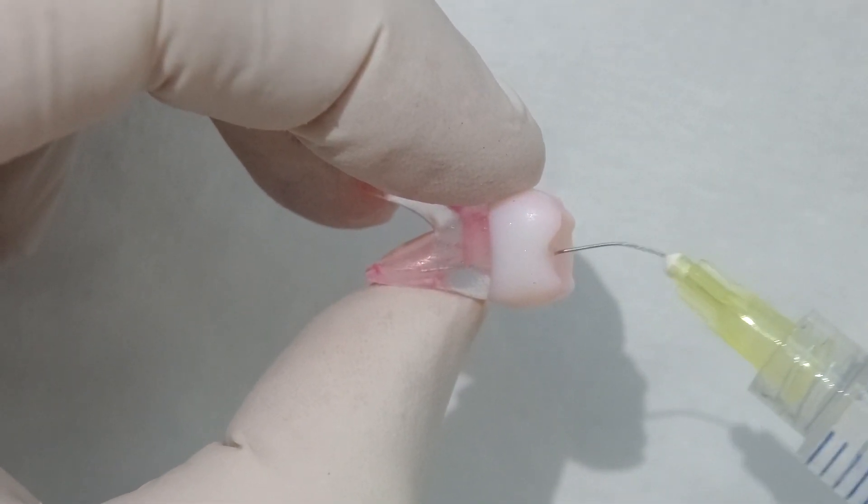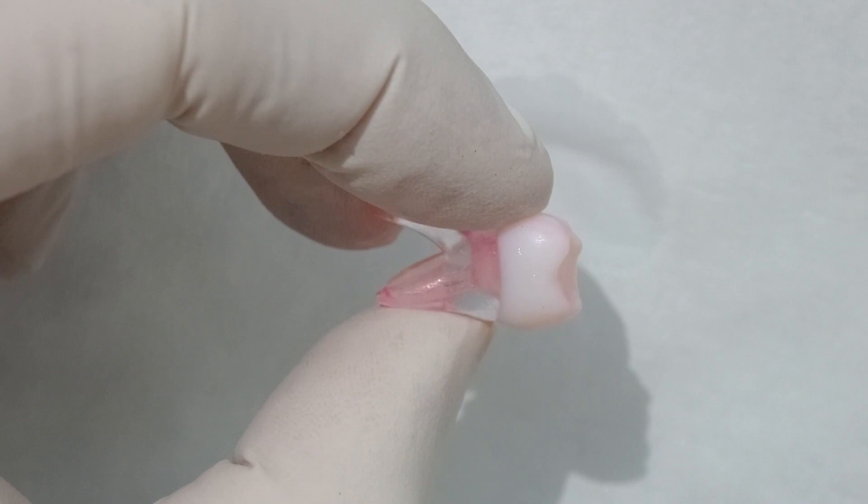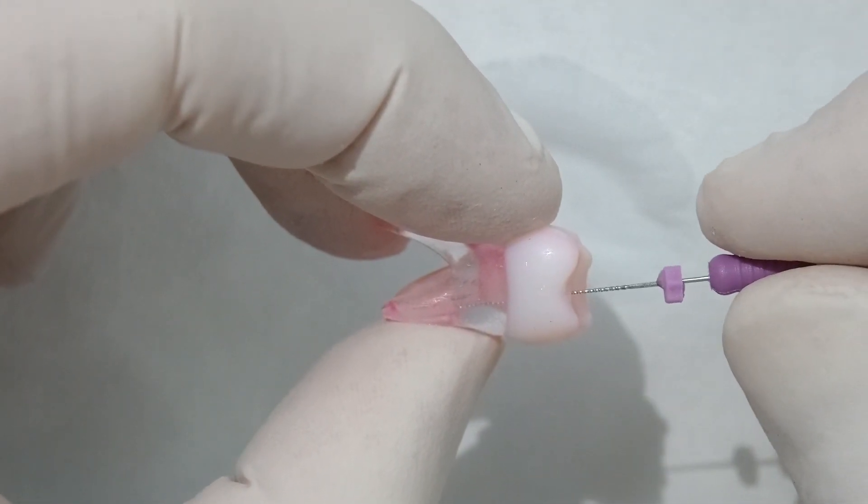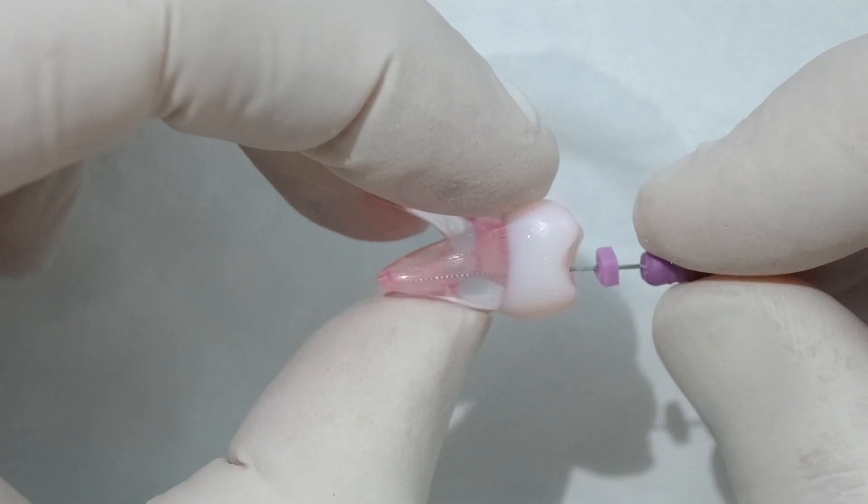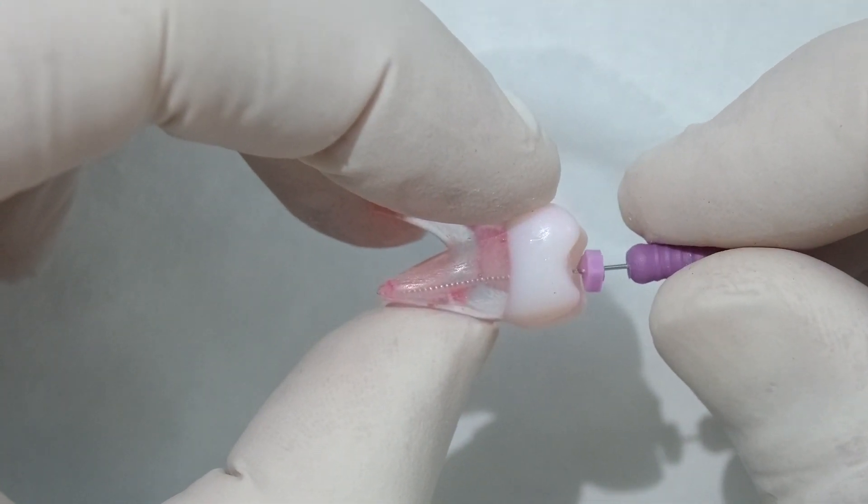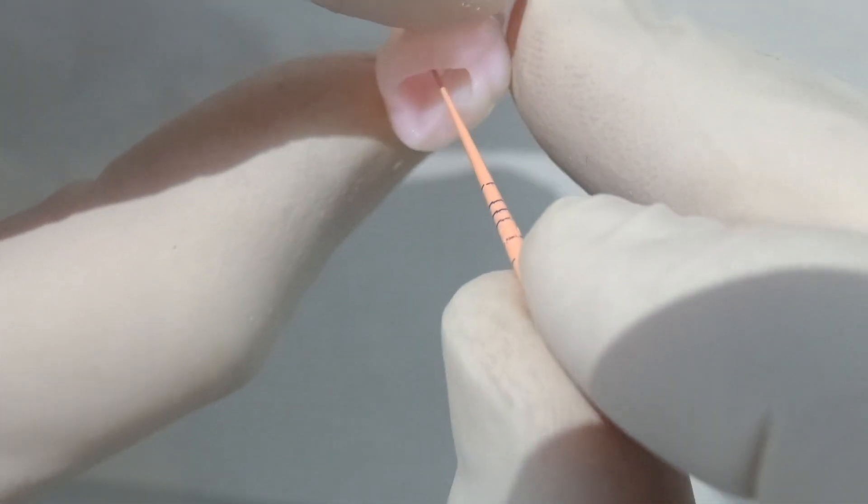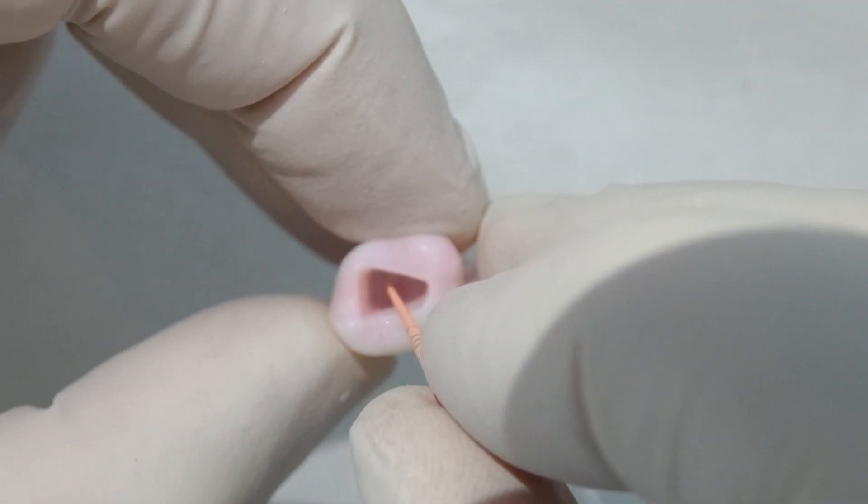Again, nice bit of irrigation. We'll go back in with our patency file. Just check that that's still patent. You need to make sure that we're always irrigating. Lots and lots of irrigant. You can't over irrigate. Keep that needle of that irrigant in the top third. Keep it moving. Don't let it bind.